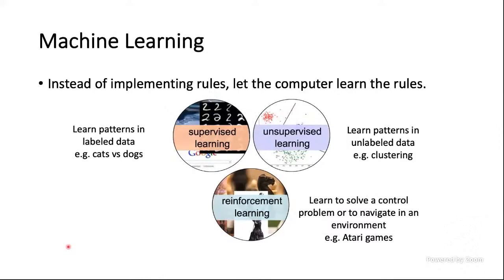Let's review the basic concepts of machine learning. There are mostly three types of algorithms. Supervised learning involves learning patterns in labeled data — for example, classifying dogs versus cats. In unsupervised learning we deal with large amounts of unlabeled data and find patterns, for example finding clusters. Lastly, reinforcement learning is aimed at solving control problems or learning to navigate an environment, for example playing Atari games.